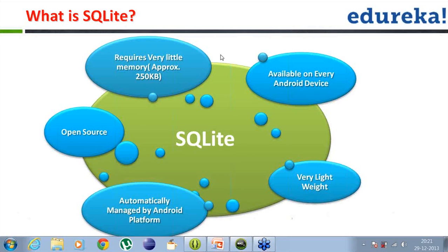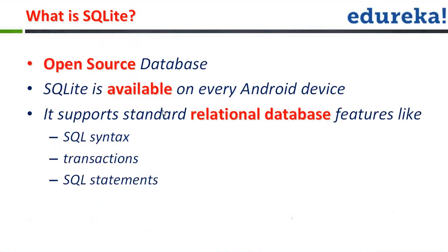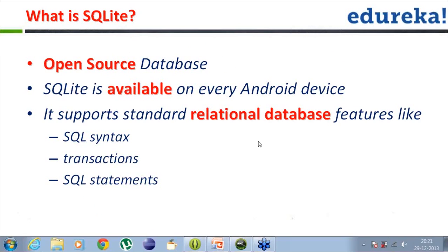The creation, execution, and querying process is automatically handled by the Android platform with the help of various APIs. It is also an open source software. SQLite is available on every Android device and supports standard relational database features — SQL syntaxes, transactions, and SQL statements. It supports all SQL syntaxes, transactions, and statements. SQLite is essentially a lighter version of an SQL database, so most SQL commands do not run on SQLite. You need to first check whether a feature or command is available on SQLite before executing it.